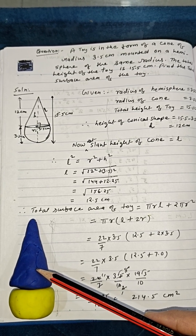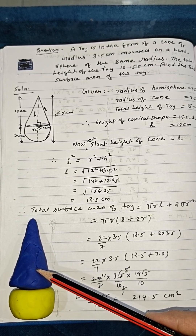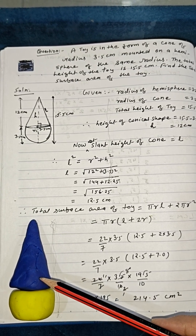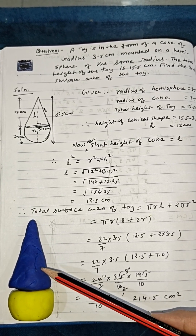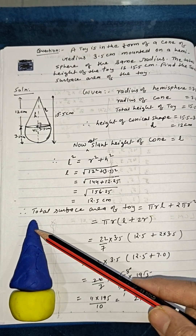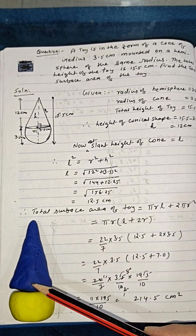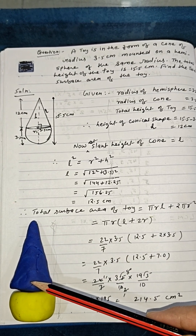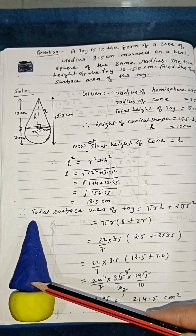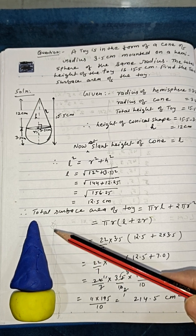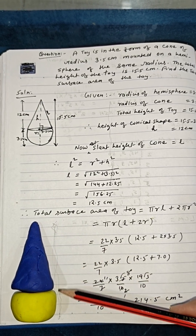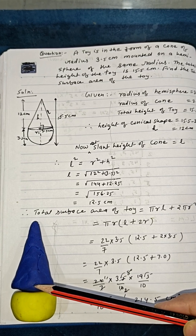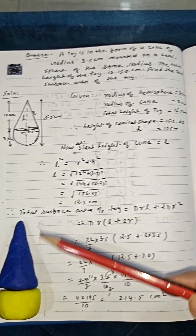In the cone surface area formula πrl, we know r but we don't know l. The variable l is called the slant height of the conical shape. To find l, we first require the height of the cone — the distance from the top to the center — and then l is found using the Pythagorean theorem.